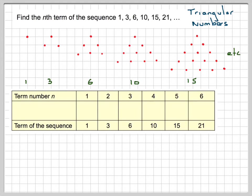OK, so if we put the numbers into a table, this is the term number. Number 1 is number 1, term number 3 is 6, and we work out the differences. From 1 to 3 you add 2, from 3 to 6 you add 3.